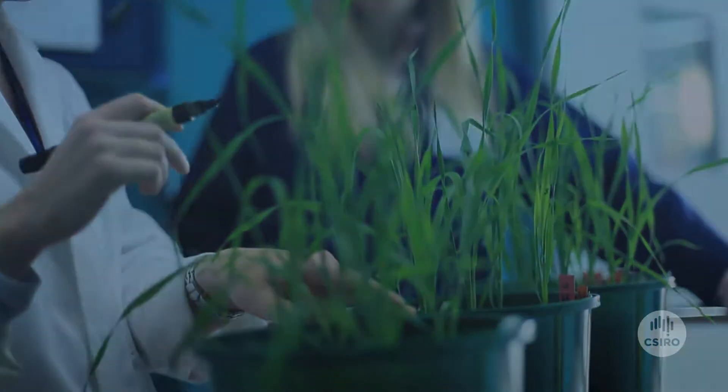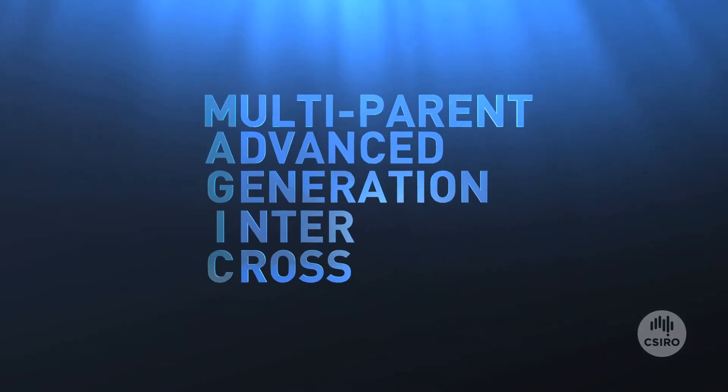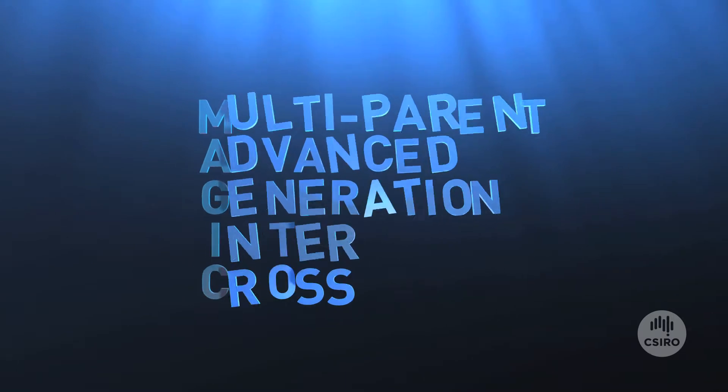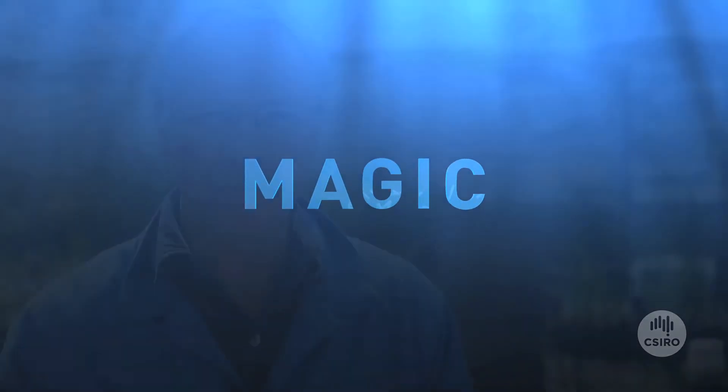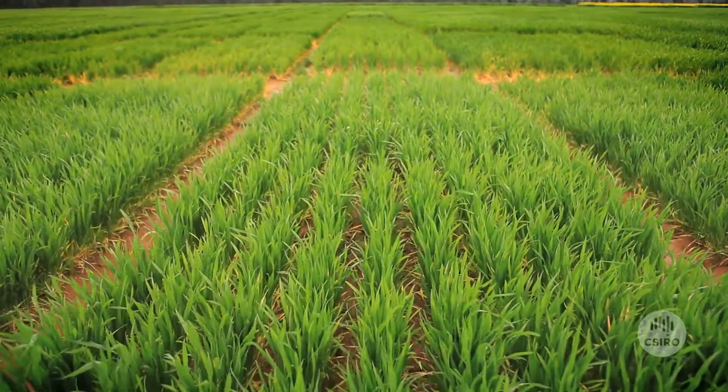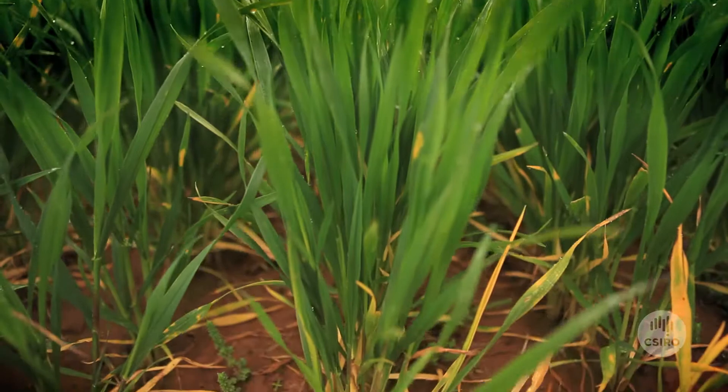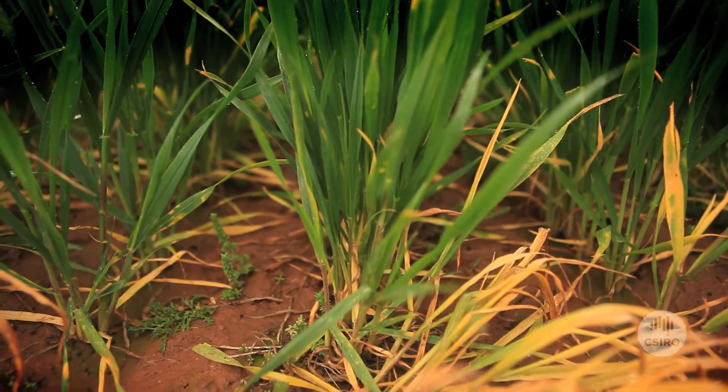One of the most exciting developments in recent years is a new approach, known as multi-parent, advanced generation intercross, or MAGIC. MAGIC is an extremely innovative population. It has the potential to really change the way in which we start breeding plants. It's going to increase the speed and efficiency of breeding.